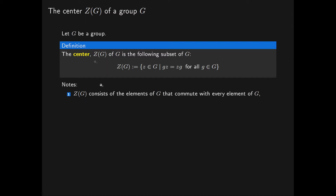Now given any group G, the centre always exists — it is always non-empty — because the identity element belongs to the centre. If we have any element G in our group G, G multiplied by the identity element is always equal to G itself, and that is always equal to the identity element multiplied by G.